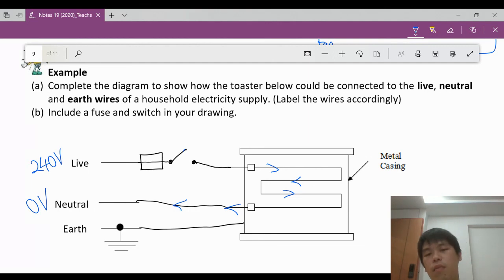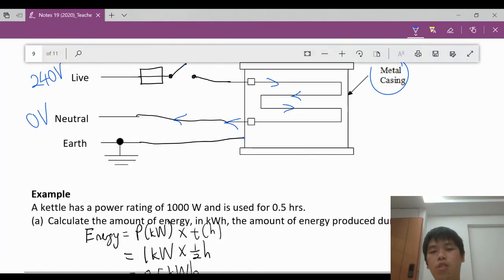Now, in the event if something happens, if the live wire were to touch the metal casing, what will happen? You need to make sure that your earth wire is connected to the metal casing. And it's connected to earth to protect your users such that it has a lower resistance. It provides a path for lower resistance. Electricity, electrical current can flow through this path and into the earth. You will not get an electric shock.